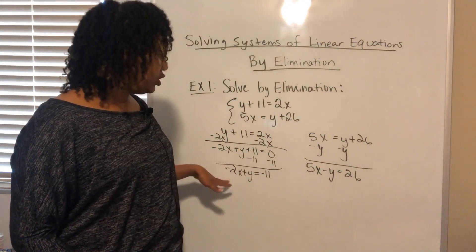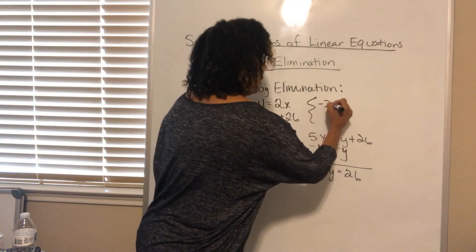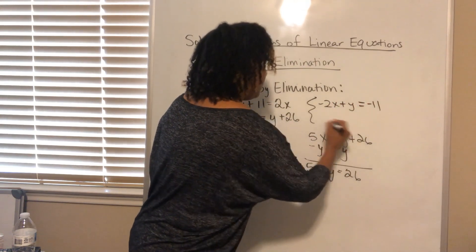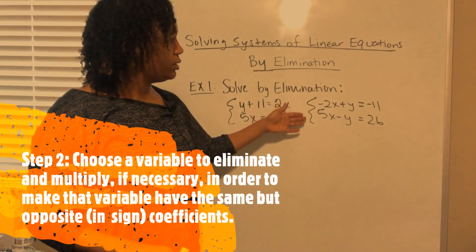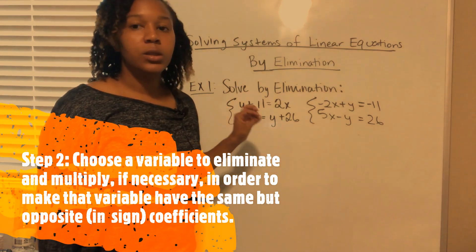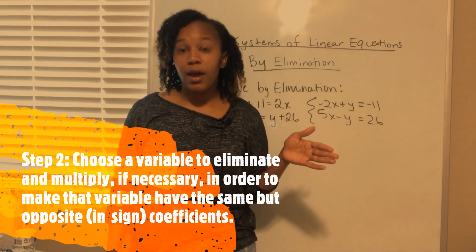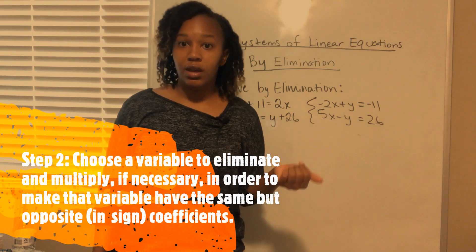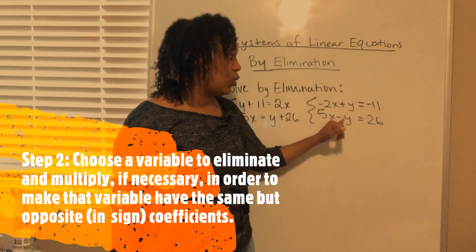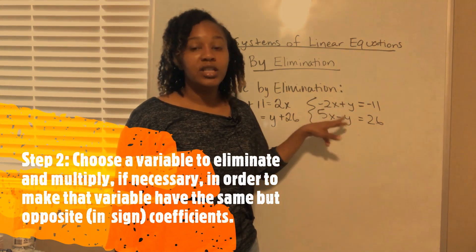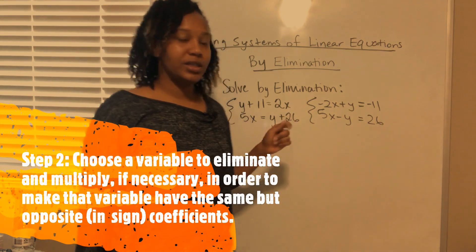So step one is to write both equations in standard form, and our new system looks like this: negative 2x plus y equals negative 11, and 5x minus y equals 26. For step two, we have to choose which variable we want to eliminate. The coefficient of x is negative 2 and 5, while the coefficient of y is 1 and negative 1 — so y already has the same coefficient where one is positive and one is negative.